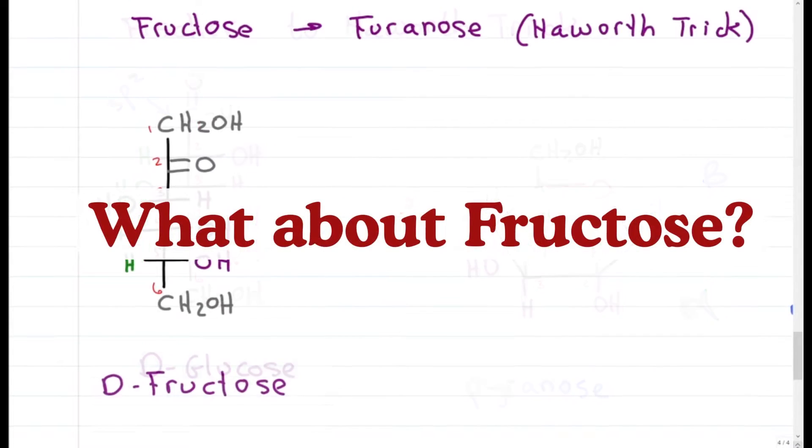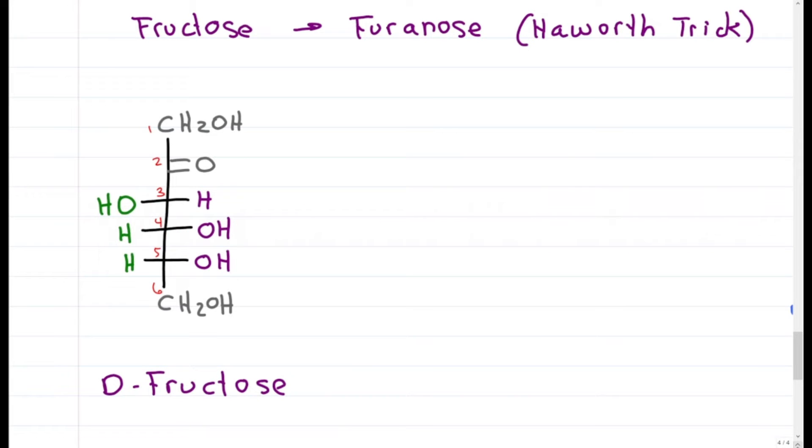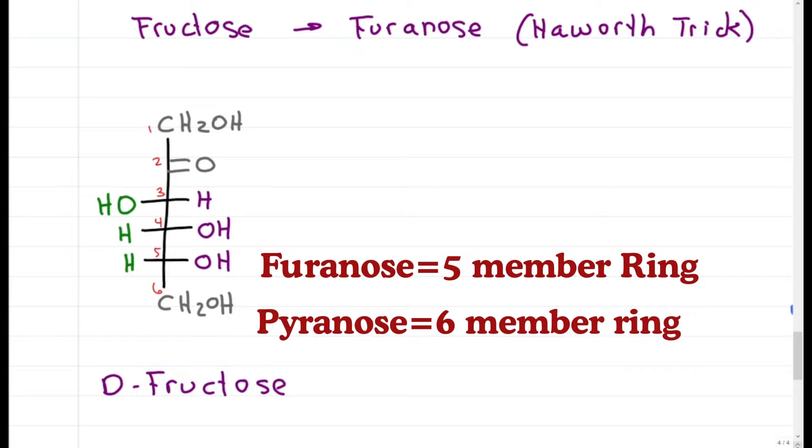What about fructose? Since fructose has a carbonyl at position 2, attacking with the oxygen on carbon 5 gives me a smaller furanose, or 5-membered ring. If carbon 6 attacks, we get a pyranose, and yes, both can occur.